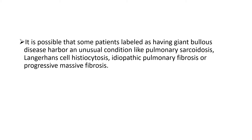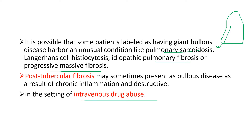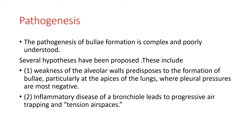If it is a giant bulla, it is associated with underlying conditions like ILD, pulmonary sarcoidosis, fibrosis, and progressive massive fibrosis. It is also seen in IV drug abusers and in post-TB fibrosis. Lastly, there are certain cases where no cause is found — we term it idiopathic bullous disease.